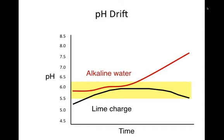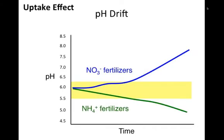Another thing to consider with pH drift is the type of water and lime charge you're using. In both cases, using a lime charge will for the most part stabilize the substrate, as shown by the black line. Whereas if you're using alkaline water — water with alkalinity — over time, if you have an excess amount, that substrate pH is going to go up. So you'll get drift occurring there.